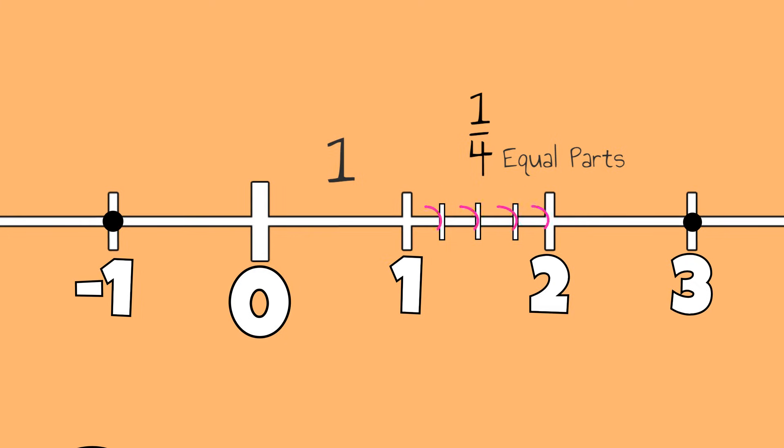We should have four equal spaces between 1 and 2. Now that we have divided our whole into fourths, each line represents 1 fourth. We can now represent the mixed number 1 whole and 1 fourth.